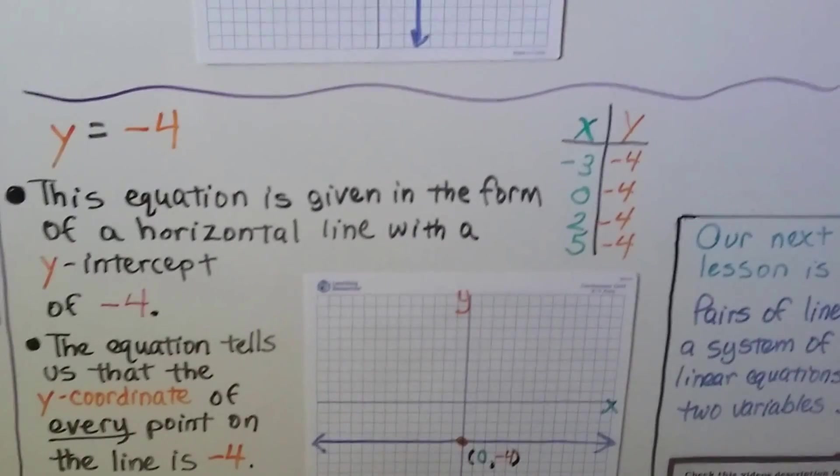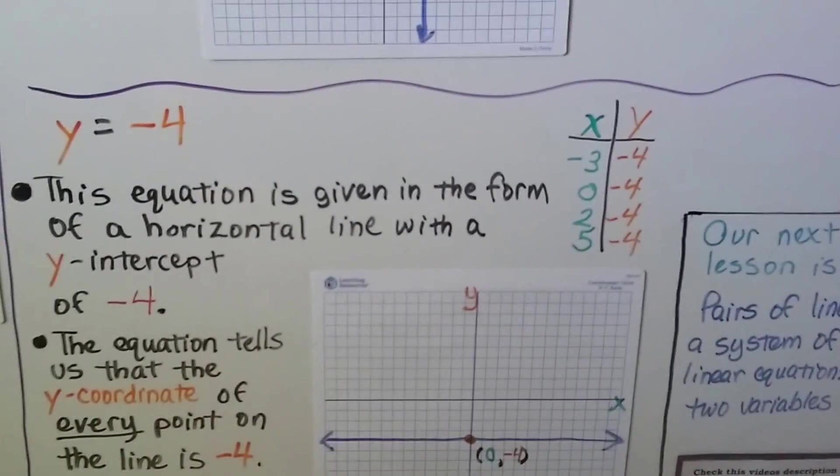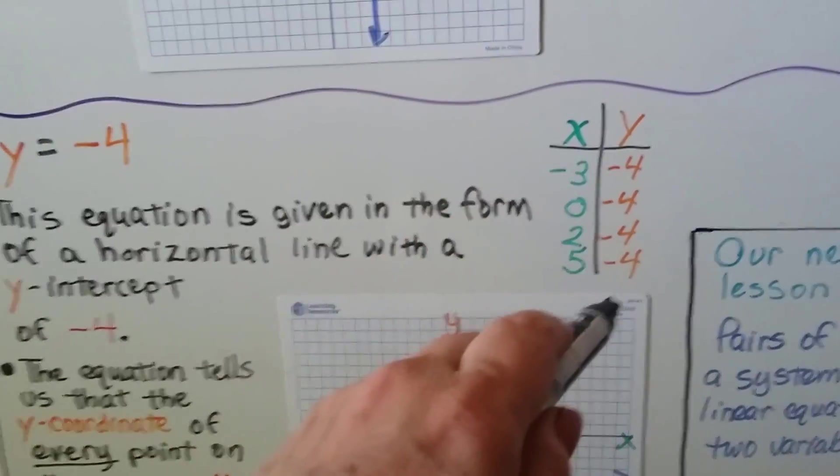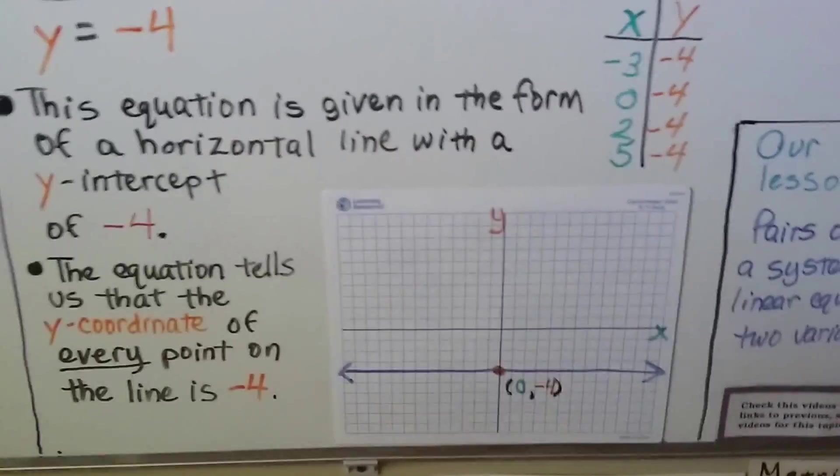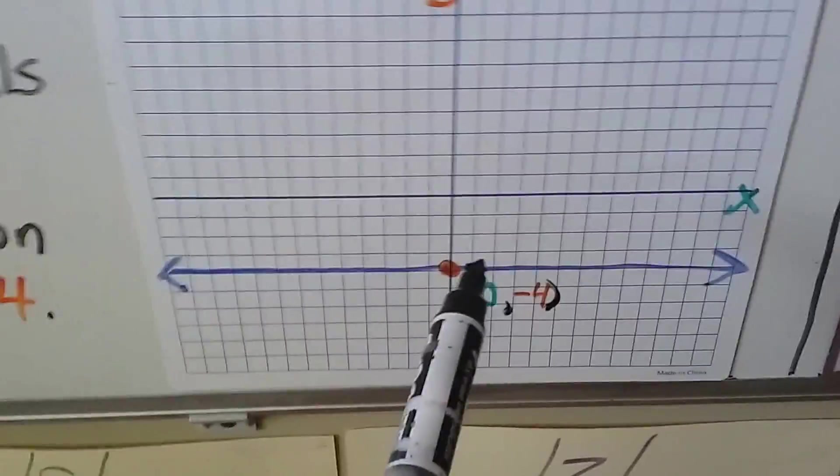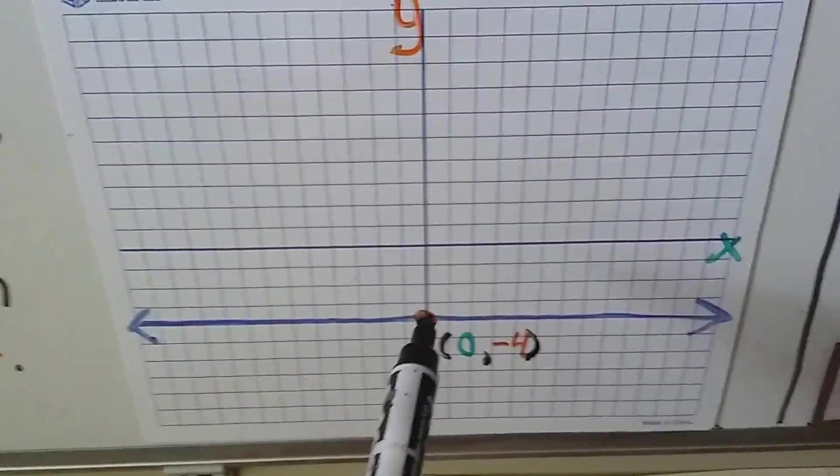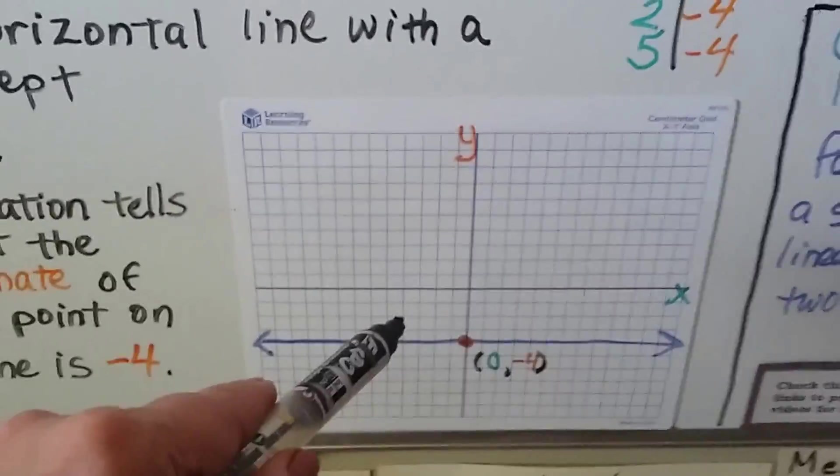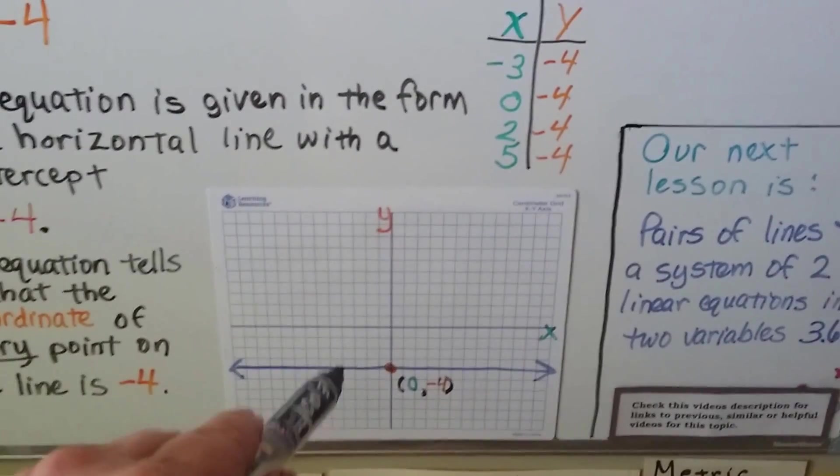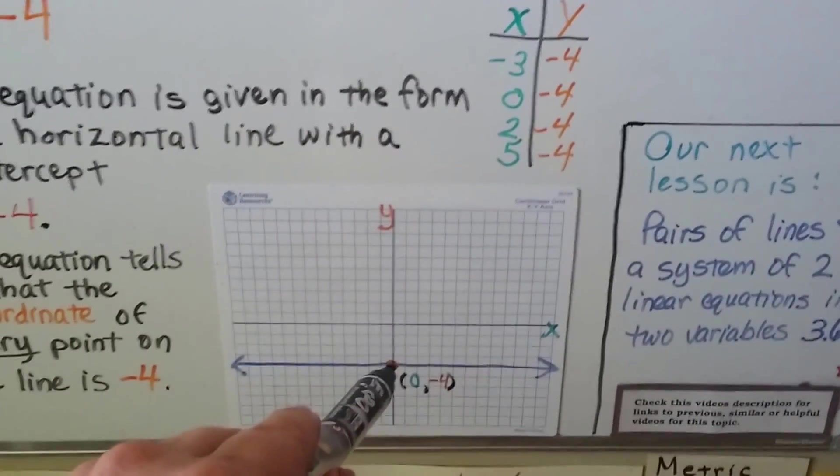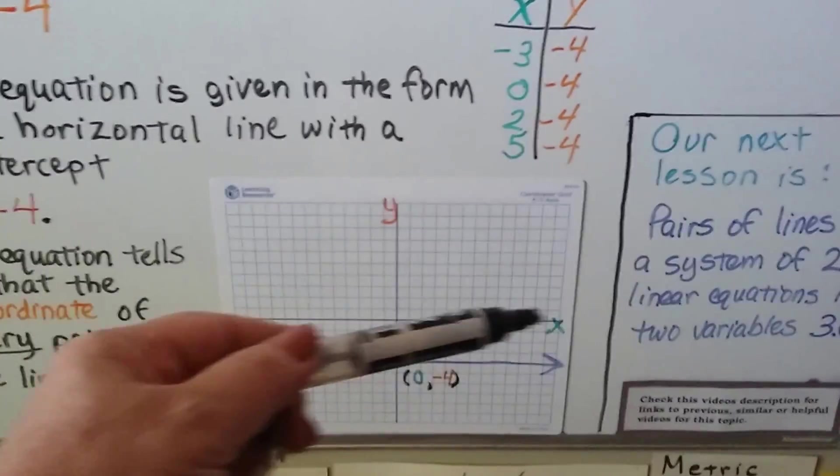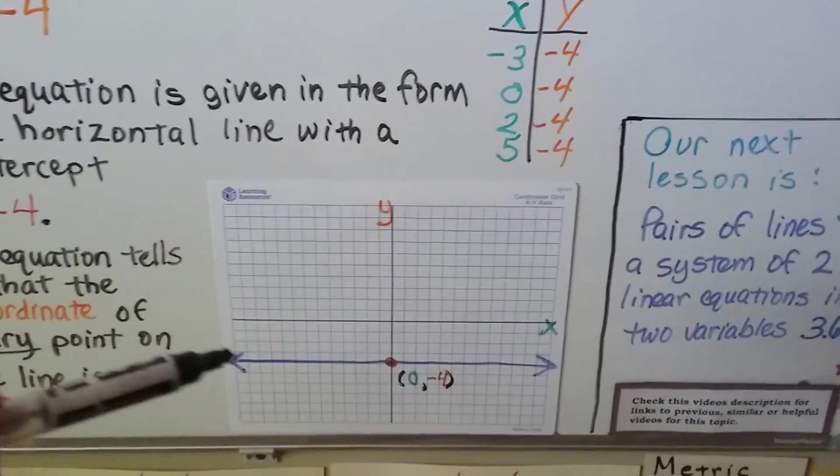If we see y = -4, this equation is given in the form of a horizontal line with a y-intercept. In our table of values, every single value for y is going to be negative 4, but x will change. The equation tells us that the y-coordinate of every point on the line is a negative 4. We put a dot at negative 4 for y and 0 for x, and we just make a horizontal line. No matter what coordinate we chose for x, y would continue horizontally.